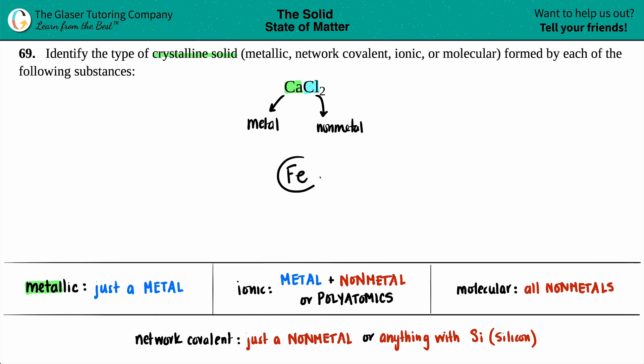Is it an ionic crystalline solid? Well, an ionic crystalline solid comes from an ionic compound, and remember an ionic compound is a metal plus a non-metal, or if we start seeing polyatomics.